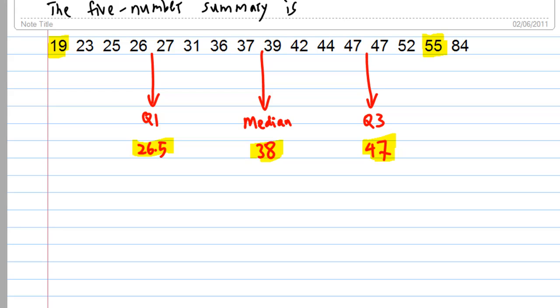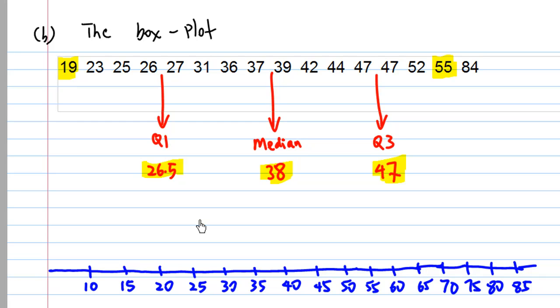This is how you get the box plot after you get the scale. Draw Q1 at 26.5, somewhere here, draw a vertical bar. Medium at 38, draw a vertical bar around 38. And third quartile 47, draw a vertical bar around third quartile 47. And then the largest number within the fence, 55, extend it to 55, and form a box between Q1 and Q3.